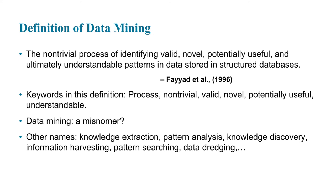The first definition: the non-trivial processes of identifying valid, novel, potentially useful, and ultimately understandable patterns in data stored in structured databases. Some big takeaways from this definition: it's a process — a step-by-step structured way of working. Non-trivial means we're dealing with large amounts of data sets. Valid means we know the data is good. Novel means we're trying to do this in unique, different ways. Potentially useful, of course. And understandable — the data has meaning; we can extract some understanding from it.